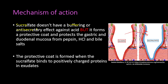Interestingly, Sucralfate doesn't work like any of the mentioned medications. It has a totally different mechanism of action — it works by forming a protective coat against the acid. This coat protects the gastric and duodenal mucosa from pepsin, hydrochloric acid, and bile salts. On the left you can see the ulcer without the protective coat, and on the right the ulcer with the protective coat formed by Sucralfate.